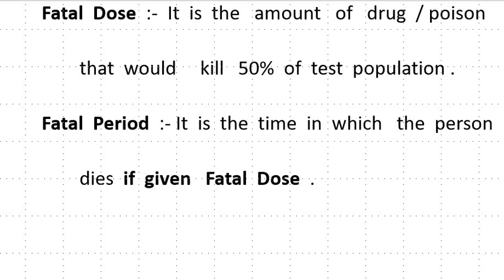What is Fatal Dose? It is the amount of drug or poison that would kill 50% of the test population. And what is Fatal Period? It is the time in which the person dies if given a fatal dose.